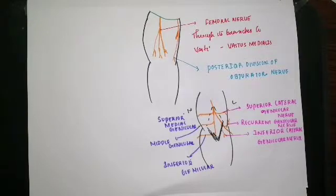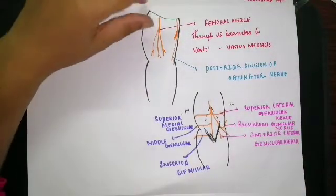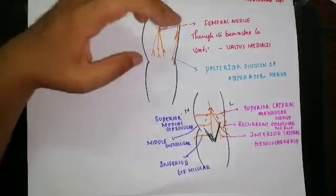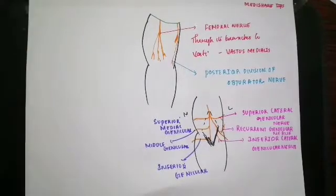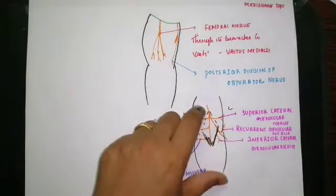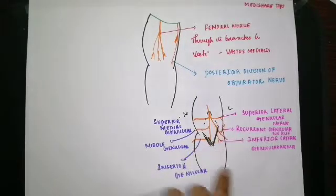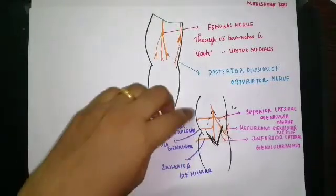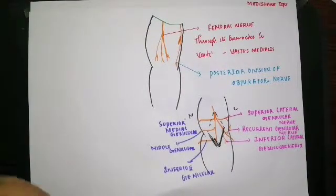These are the branches of the tibial nerve and the common peroneal nerve supplying the knee joint. To summarize: the nerve of every compartment of the thigh supplies the knee joint. The femoral nerve from the anterior compartment supplies it through its branches to the vastus muscles. The obturator nerve supplies it through its posterior division. The sciatic nerve, through its terminal branches — the tibial nerve and the common peroneal nerve — supplies the knee joint. The common peroneal nerve gives superior lateral genicular, inferior lateral genicular, and recurrent genicular branches, while the tibial nerve gives superior medial genicular, inferior medial genicular, and middle genicular branches. Thank you for watching this video; please subscribe to the channel.